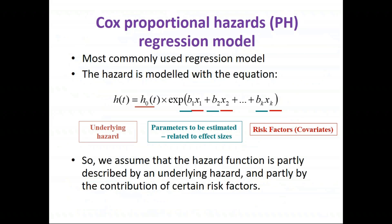The final method I'm covering today is the Cox regression model, or Cox proportional hazards regression model — the most commonly used regression model for analysing time-to-event data. It allows us to explore the effect of several variables or covariates on the times to events, denoted as covariate effects X1 to XK in the model.